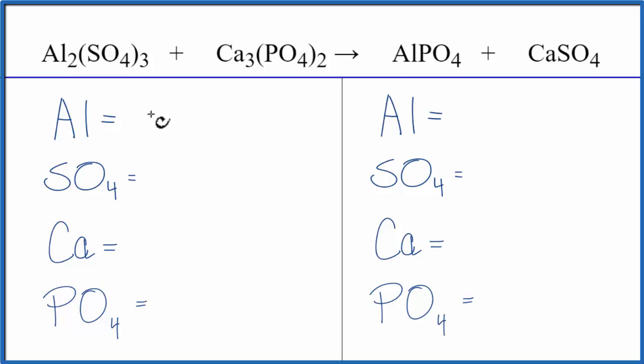We're going to do something a little different here. We have SO₄ here, and we have it again here. It's a polyatomic ion called the sulfate ion. Since we have it here, it stays together in the reaction, and we're just going to count it as one item.